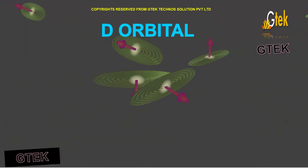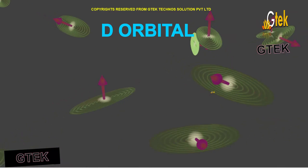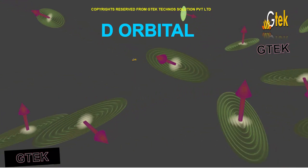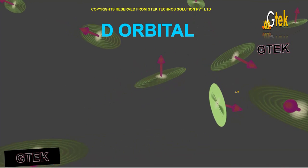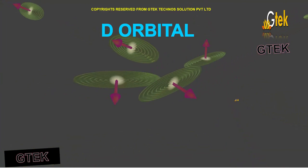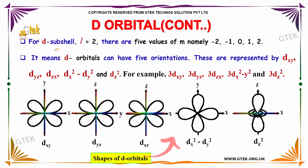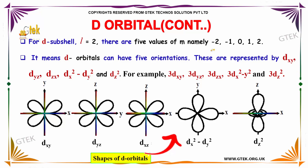This is how the structure of a d-orbital looks — 5 different orbitals with different lobes. For the d-subshell, the l value is 2. There are 5 values of m, namely: −2, −1, 0, 1, and 2.